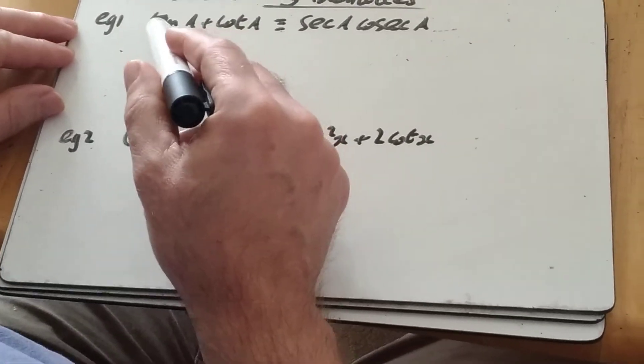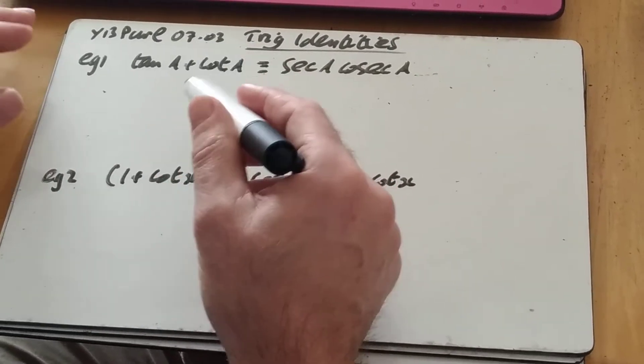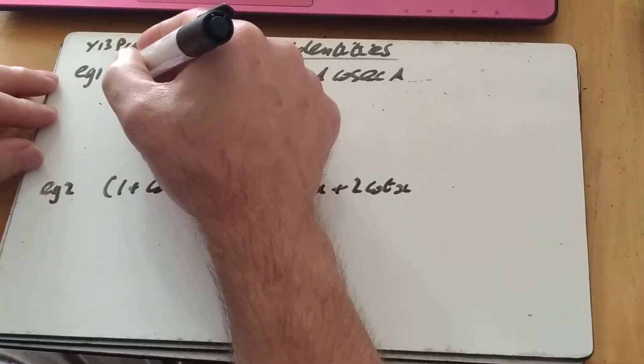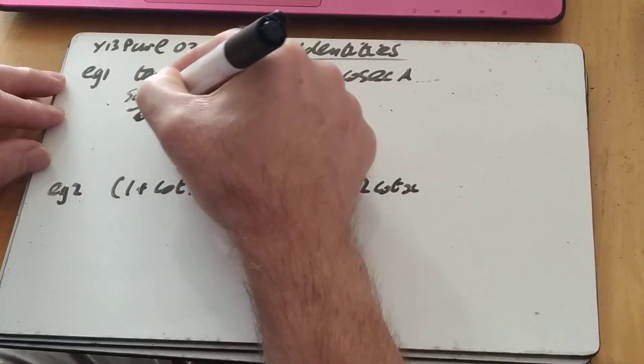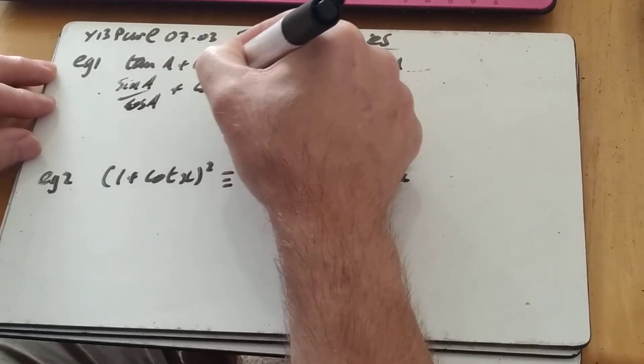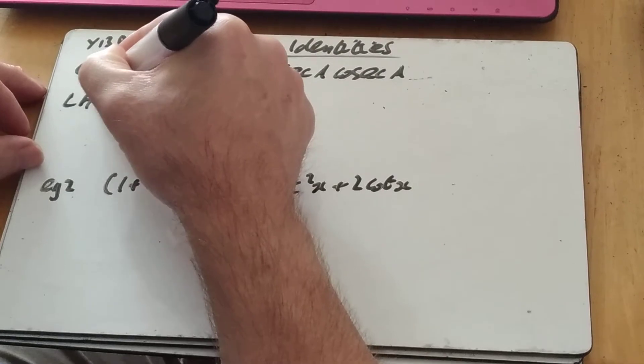So what will we do if it's got tan and cot and it's not obviously a Pythagorean identity? Change everything to sine over cos. If you get everything in terms of sine and cos, then we can look at what we're doing.